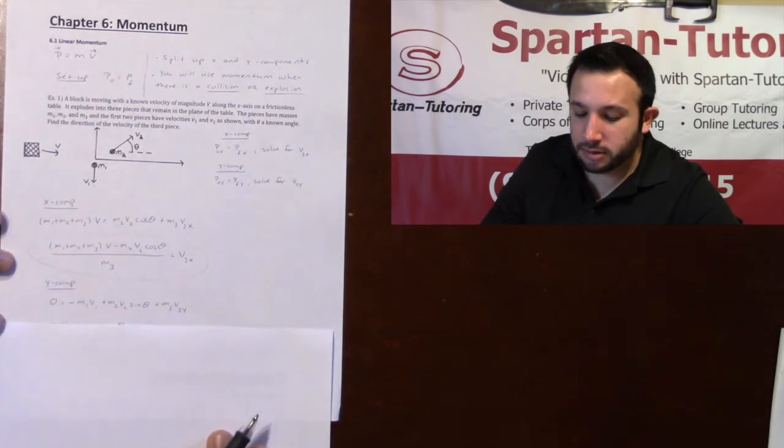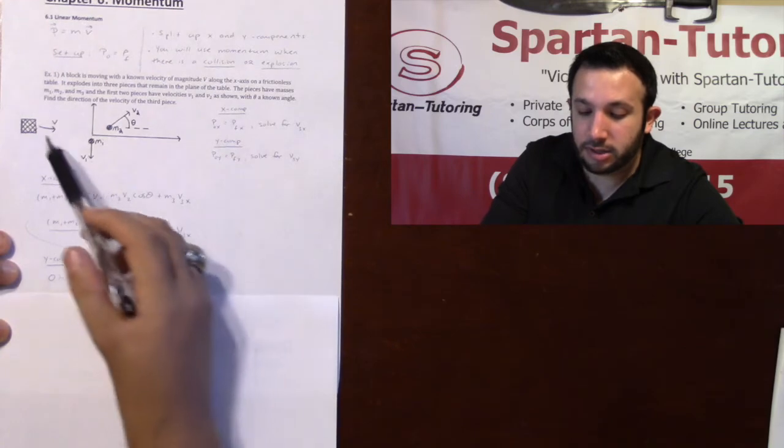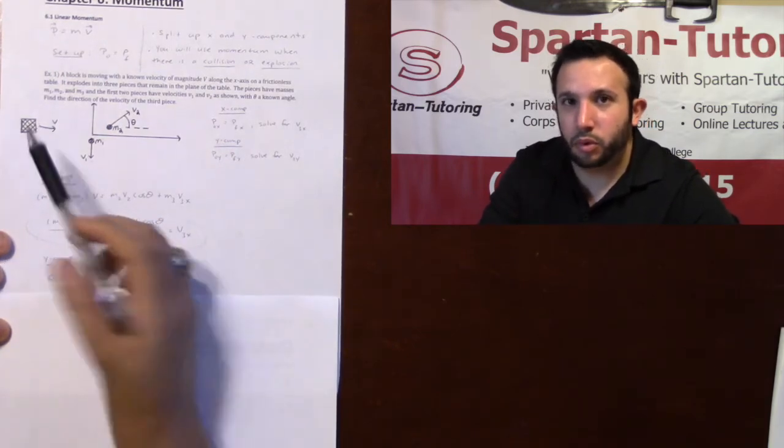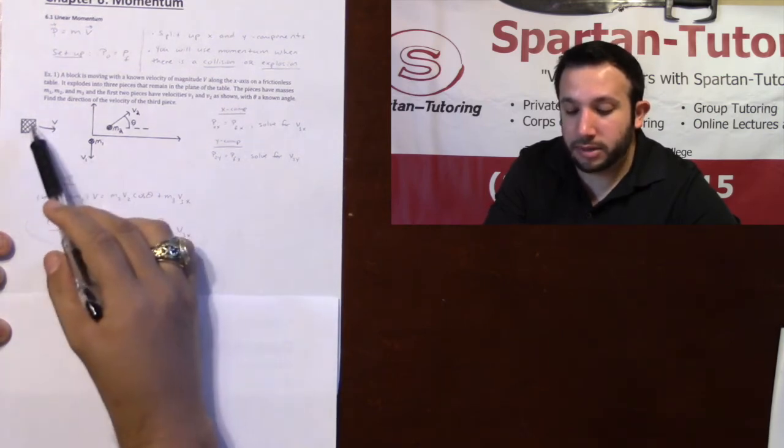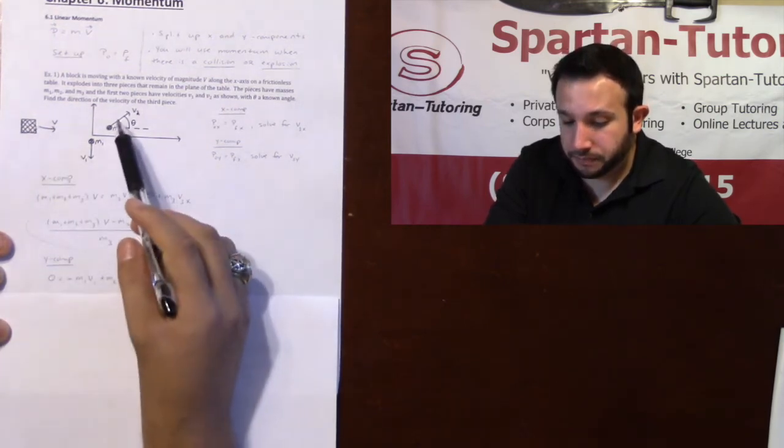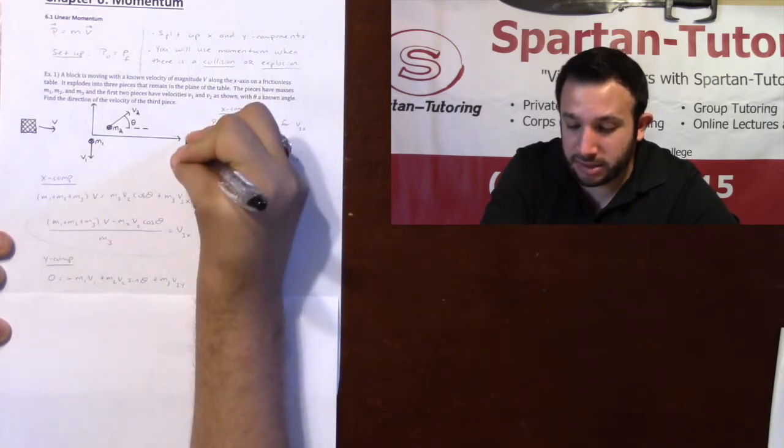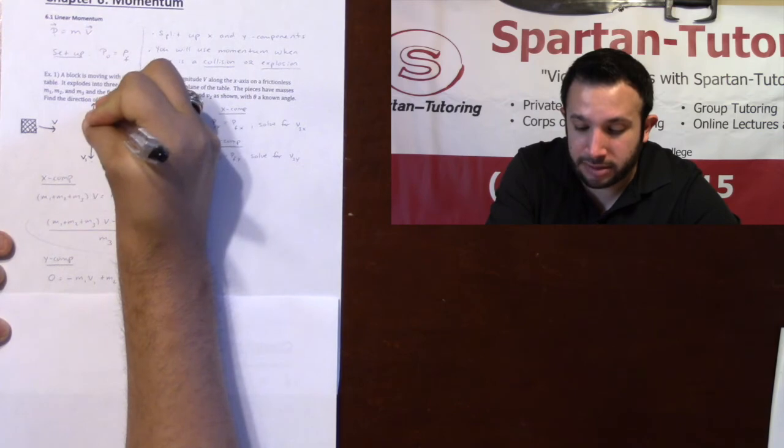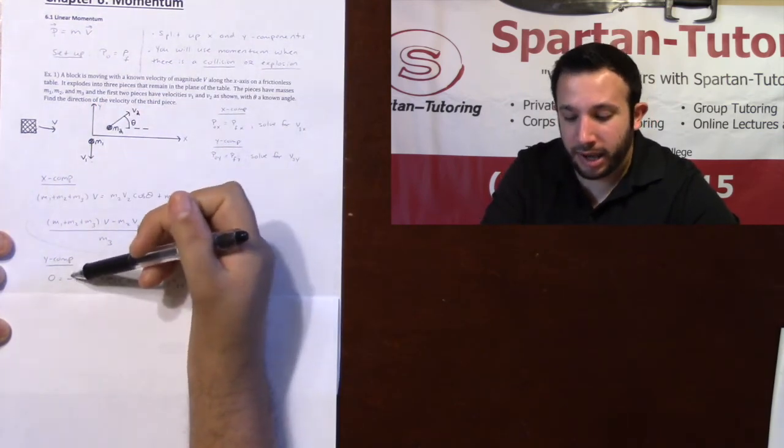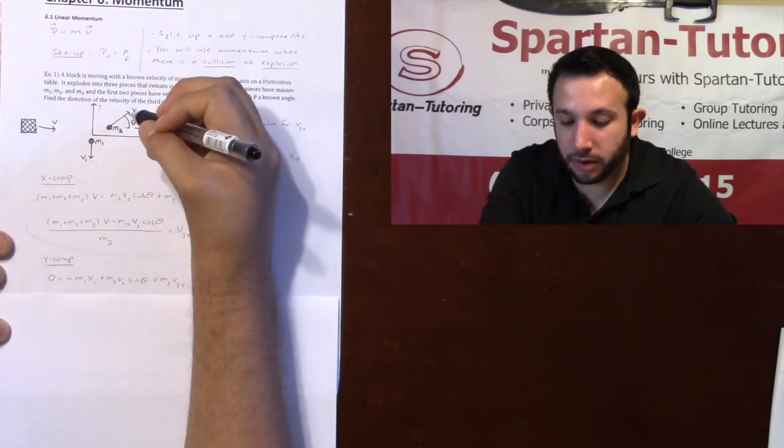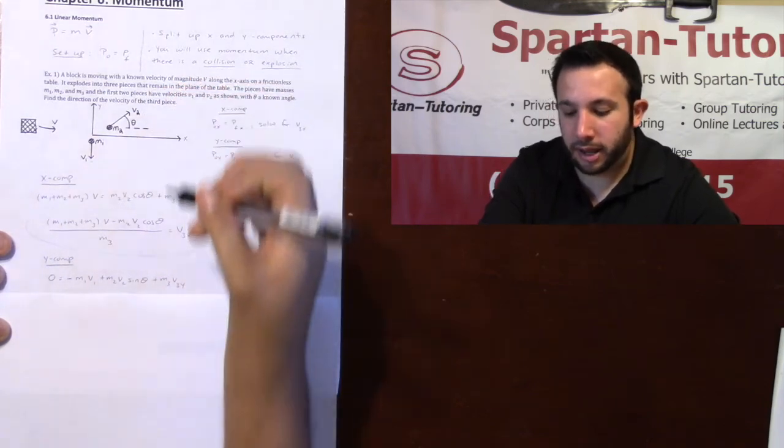Now that you've done the x component, you do the exact same thing for the y component. If you look here, initially this block is not moving in the y direction. The y component of this initial momentum is zero. And then as for these guys, m1 according to my axis - if this is my positive x and my positive y - then it has a negative velocity in the y direction: negative m1 v1.